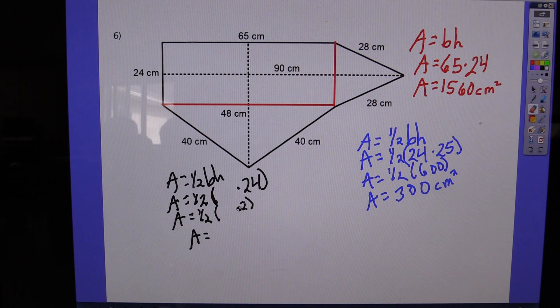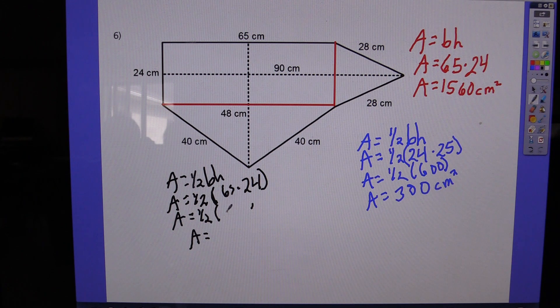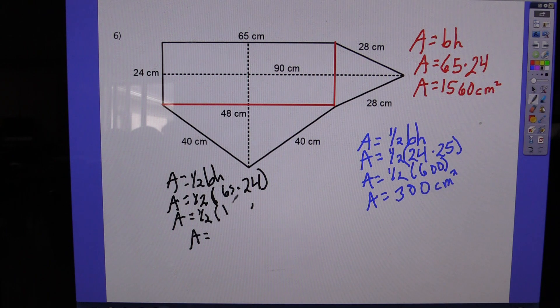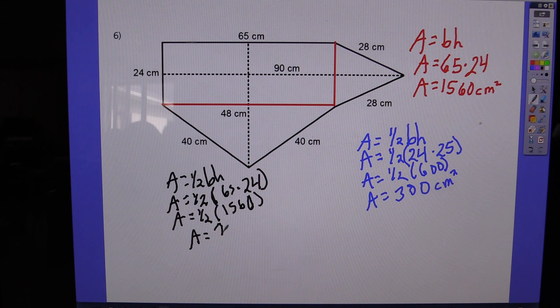It's really always great to have an extra set of eyes watching this sort of thing. I'm glad Gracie caught that for me. So that's going to change that value and it's going to change this one as well. So I'm going to go back and put 65 times 24. And what is 65 times 24, Gracie? 1,560. And what's half of 1,560? 780. 780 centimeters squared.